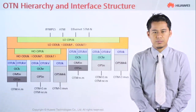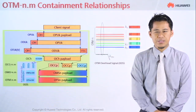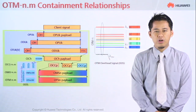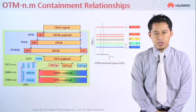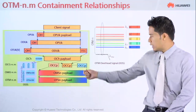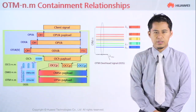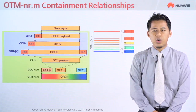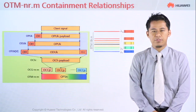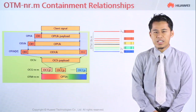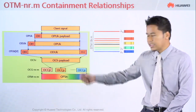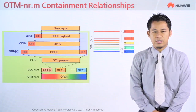The OTN containment relationship shows the full function where lambda OSC is supported, contained within the OOS. The second case is the OTM, which has a half containment relationship — as you can see, there is no lambda OSC within the OOS in this case.